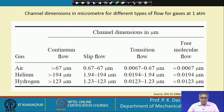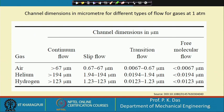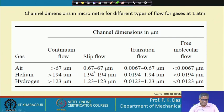The channel dimension in micrometers for different types of flow for gases at one atmosphere is tabulated. For air: if the channel dimension is greater than 67 micrometers, it is continuum flow; 0.67 to 67 micrometers is slip flow; 0.0067 to 0.67 micrometers is transitional flow; and less than 0.0067 micrometers is free molecular flow.